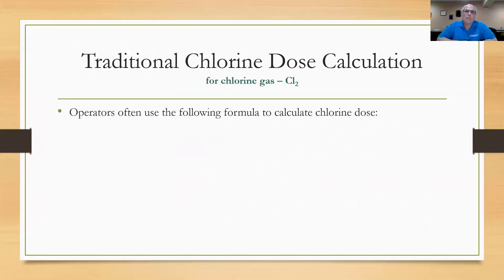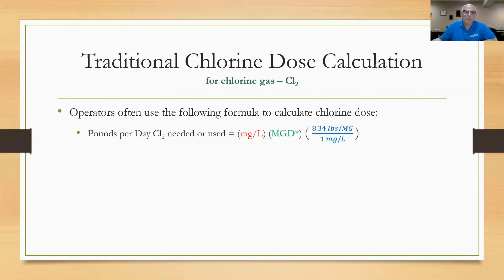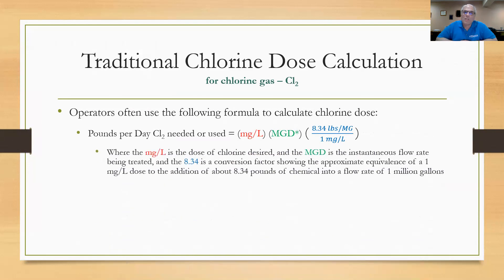This is the traditional chlorine dose calculation that we have used since time immemorial for chlorine gas. Operators often use this formula to calculate chlorine dose. Pounds per day chlorine needed equals milligrams per liter times MGD times the conversion factor of 8.34 pounds per million gallons per one milligram per liter. The milligrams per liter is the dose of chlorine desired, the MGD is the instantaneous flow rate being treated, and 8.34 is the conversion factor showing the approximate equivalence of one milligram per liter dose to the addition of 8.34 to the flow rate of one million gallons.